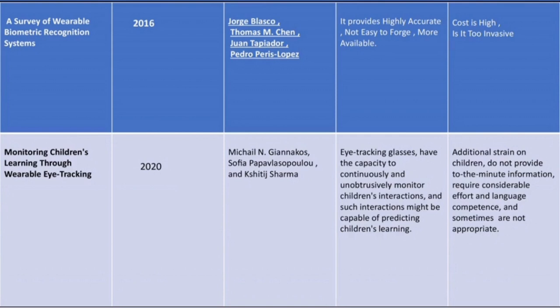Fourth title: Monitoring children's learning through wearable eye tracking, published in 2020. The pros are: eye tracking glasses have the capacity to continuously and unobtrusively monitor children's interactions, and such interactions might be capable of indicating children's learning. The cons are: additional strain on children, do not provide minute-by-minute information, require considerable effort and language competence, and are sometimes not appropriate.